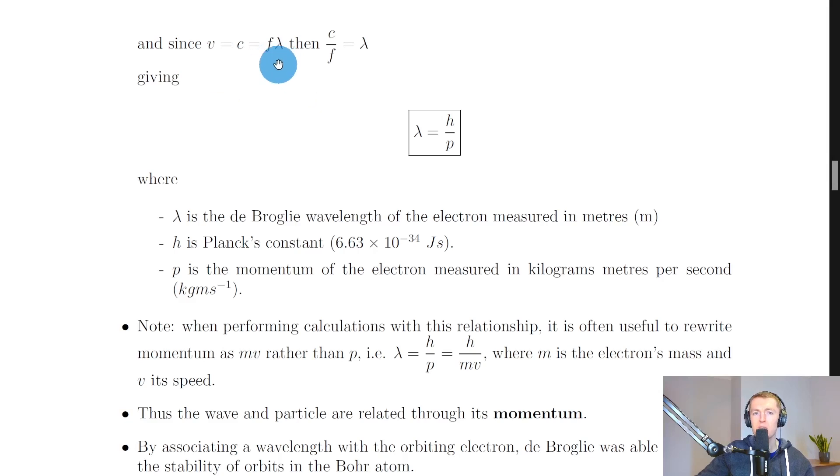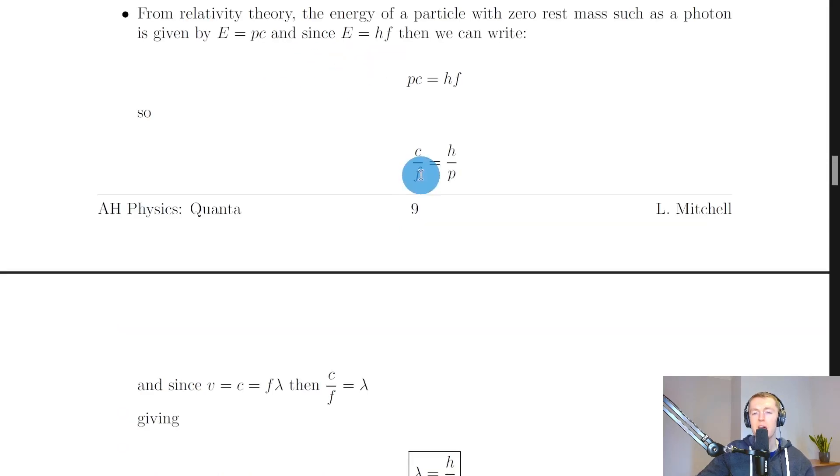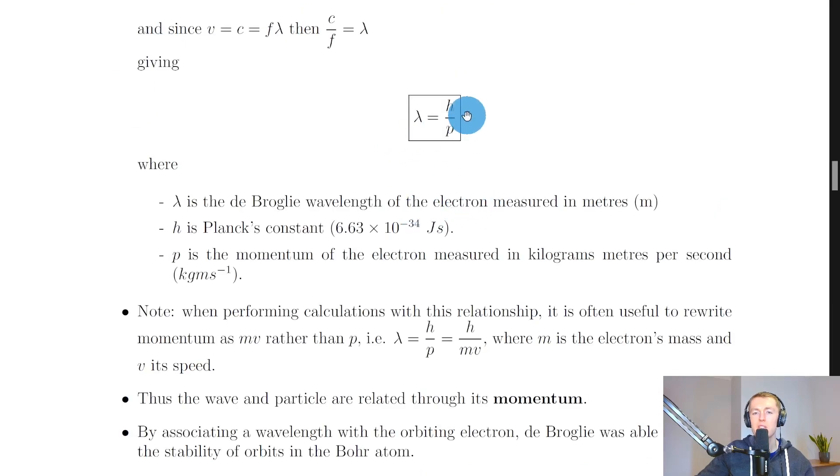And since the wave equation V equals F lambda, or since we're using photons we can use the speed of light C equals F lambda, then we have that C over F is equal to lambda. And this means that if we replace C over F with lambda here, then we have lambda equals H over P.